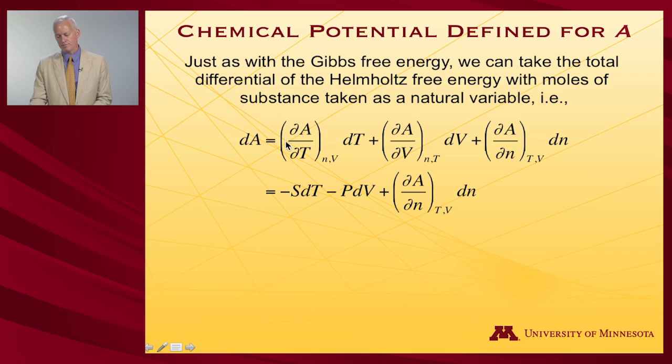Of course, these partial derivatives, within those natural variables, we choose those variables because they are well-known thermodynamic quantities. So we get the entropy for the first term and the pressure for the second term.